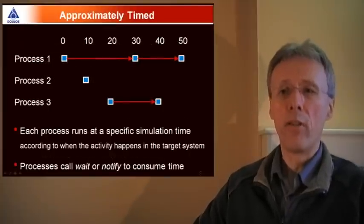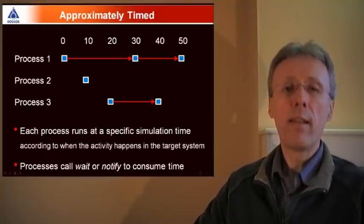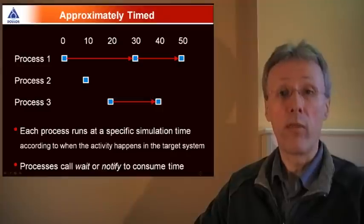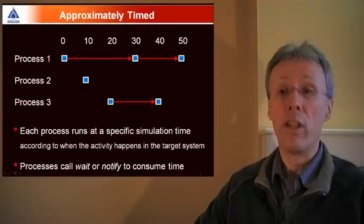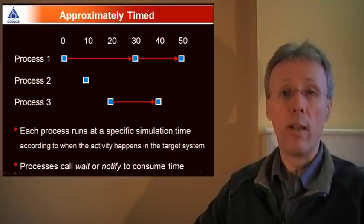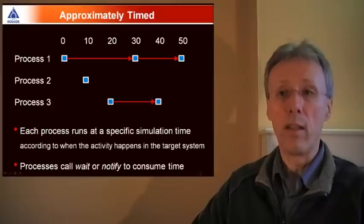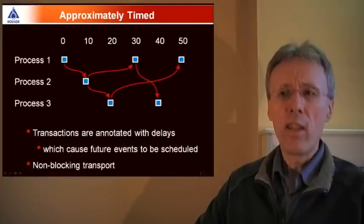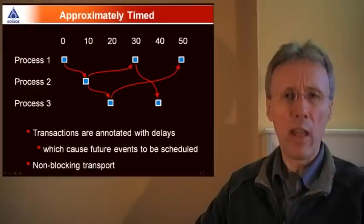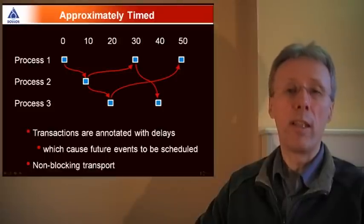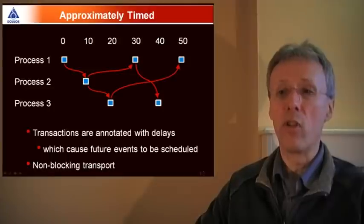With the approximately timed coding style, each process runs at a specific point in simulation time. And the significance there is that a process is modelling some activity in the target system, and the simulation time when the process runs corresponds to the actual time in the target system, when the corresponding activity occurs. So the system C processes will keep themselves in lockstep with simulation time, by making system C calls to the wait and to the notify method in order to consume simulation time. So with AT, transactions get annotated with delays, and because the characteristic feature here is to keep everything synchronised with the system C simulation time, those transactions would cause future events to be scheduled to make sure the corresponding activity occurs at just the right point in time.